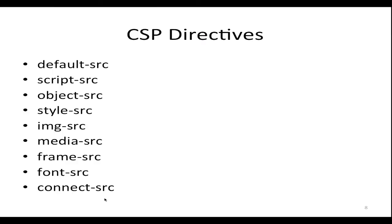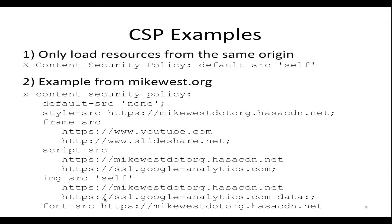There are various directives that CSP actually supports that can define what whitelist trusted locations we want stuff to come from — JavaScript, styles, images, frames, fonts, and so on. Number one, the strictest thing you could do is to only load resources from the same origin. You define that content security policy HTTP response header saying the default source is 'self,' meaning I only trust stuff to come from my origin — my protocol, my port, and my domain combination.